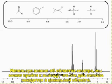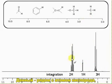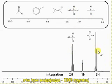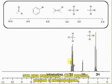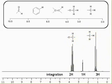Looking at the regions, we can see that two of these peaks are within the alkyl region, and one is in the alkyl region but next to oxygen. So we could imagine that the 3-hydrogen peak is just a CH3 group, whereas the 2-hydrogen peak is a CH2 group but next to oxygen.